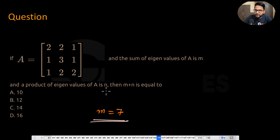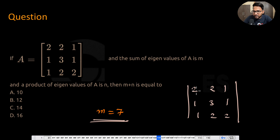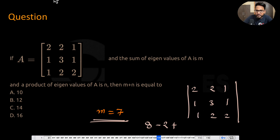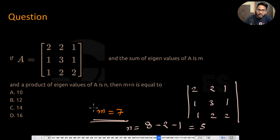The product of eigenvalues means the determinant. So let's find the determinant of the 3x3 matrix [2,2,1; 1,3,1; 1,2,2]. Computing it gives 6 minus 6 minus 2, which is negative 2 into 2 minus 1 plus 1 into 2 minus 3, yielding minus 1. Wait — so N equals 5. Then M plus N equals 7 plus 5 equals 12. That's the answer. M is the trace (sum of eigenvalues) and N is the determinant (product of eigenvalues).